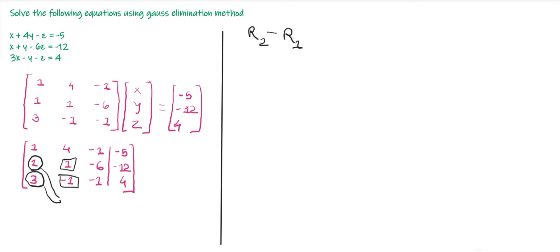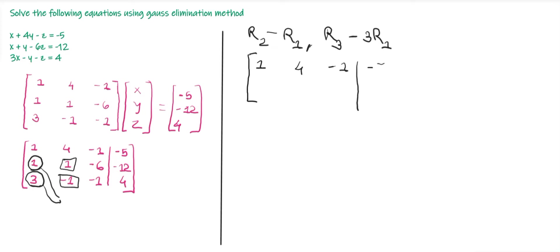Our first row operation is R2 − R1, because 1 − 1 = 0. The second row operation is R3 − 3R1, because 3 × 1 = 3 and 3 − 3 = 0. Copying the first row (no change): [1, 4, −1 | −5]. After R2 − R1, the second row becomes [0, −3, −5 | −7].